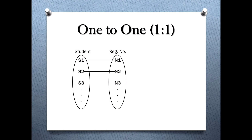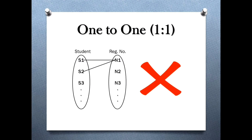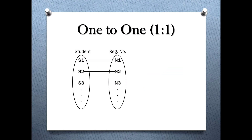Let's take an example. We have two entity sets: student and registration number. Every student can have only one registration number. Note that we say 'at most one,' so it is not necessary that every entity participates in the relationship — S3 and N3 are not related. Two students cannot share the same registration number, and one student cannot have two different registration numbers. Even if there is no participation, we can say it is a one to one relationship.